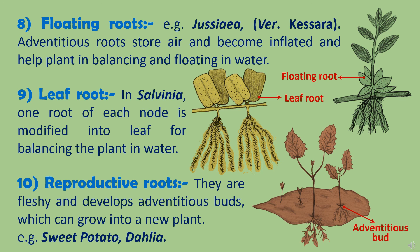Some plants have fleshy roots with adventitious buds. These buds can grow into a new plant, and these roots are called reproductive roots because they help in vegetative reproduction. Vegetative reproduction means the development of a plant without involvement or fusion of gametes. Such types of roots are found in sweet potato and Dahlia. That's all about the modification of adventitious roots. We have already covered the modification of taproot in the last video — you can check out the description box for the last video. Thank you.